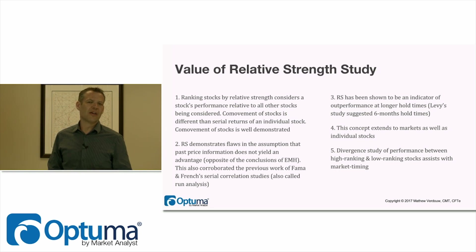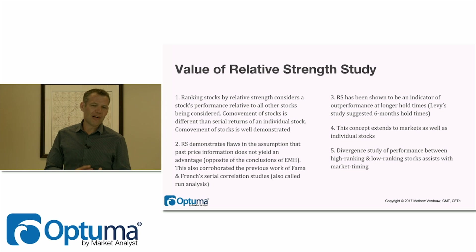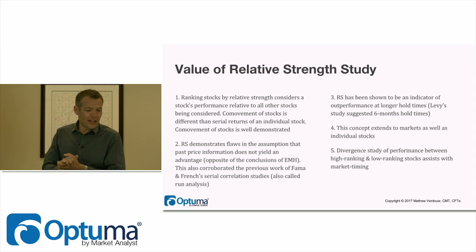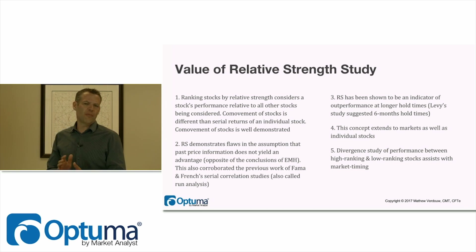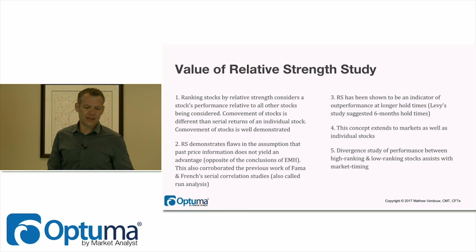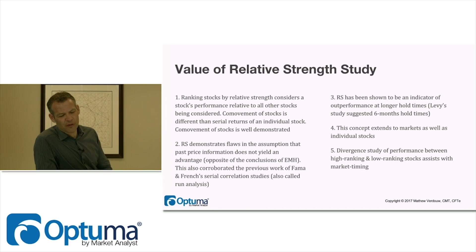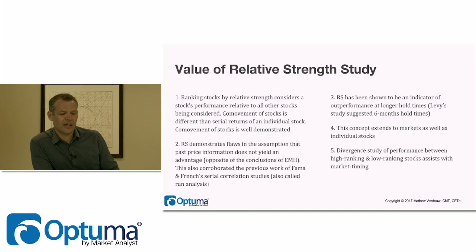Efficient markets would expect that a stock that has outperformed gets quickly pulled back by arbitrage and similar scenarios. Relative strength also corroborates the work by Fama-French and their serial correlation studies, also called run analysis. Relative strength is helping to debunk the efficient market hypothesis that everything is random, can't be predicted, and that nothing can be gained from technical analysis. Relative strength has been shown to be an indicator of outperformance at longer hold times; Levy's study suggested six-month hold times.